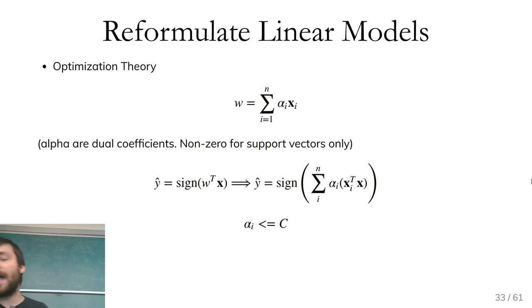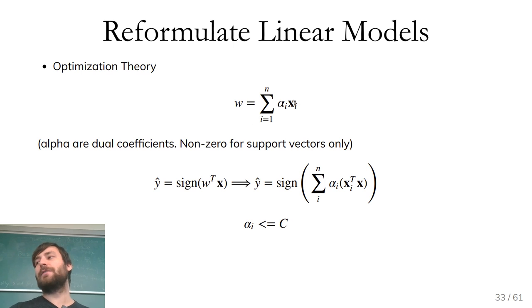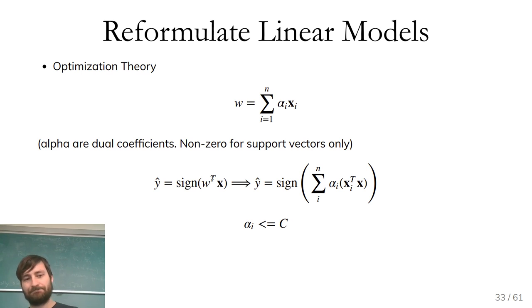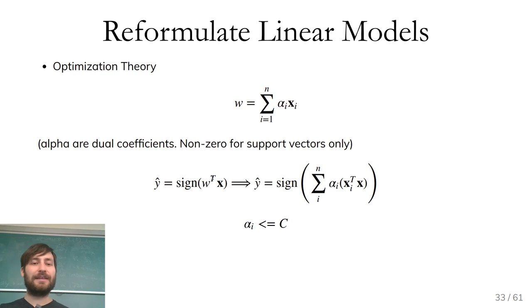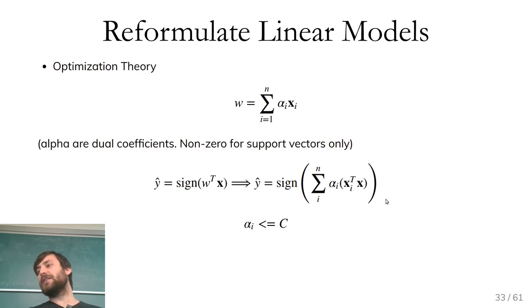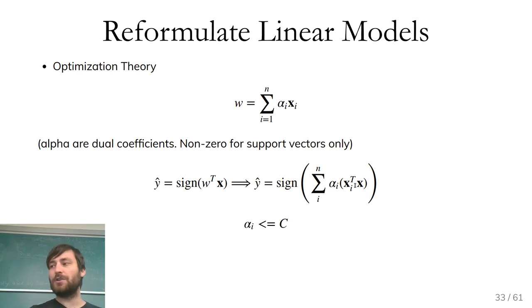Assuming I know these alphas, I can rewrite the prediction as the sign of the sum over the alphas and the x_i, where x_i are training points. For a new data point X, I compute the inner products weighted by alpha_i and compute the sign — this is my classification outcome. We can show that these alphas are always limited by C, which is what I meant by C limiting the influence of each data point — it actually limits this alpha in the linear combination.